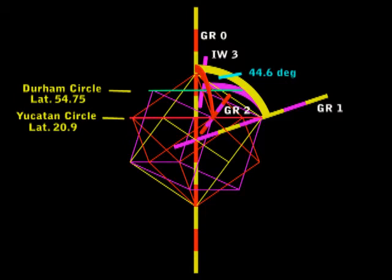This circle is latitude 54.75, the same as Durham, England. So this purple cube has just formed another two golden ratio vectors.